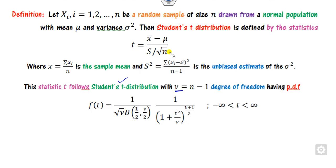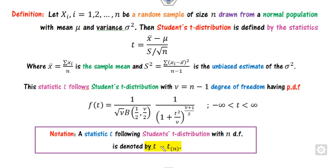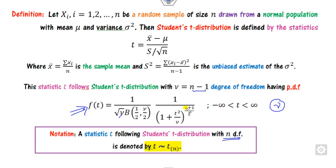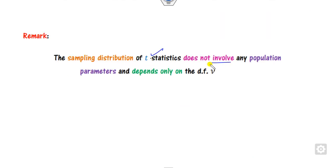Once you have the statistic T, it follows the T-distribution. We generally denote this small t with n degrees of freedom; when there are n-1 degrees of freedom, we write n-1. You can also clearly see that this function is totally dependent on only mu. So this statistics distribution does not involve any of the other population parameters.